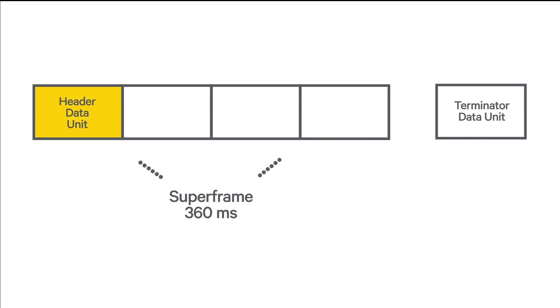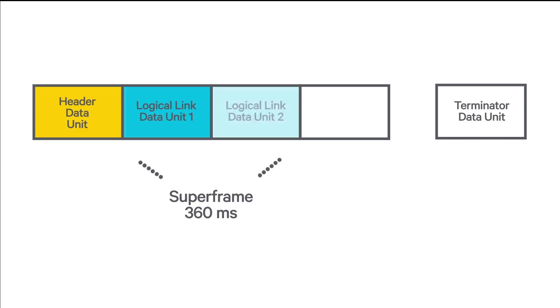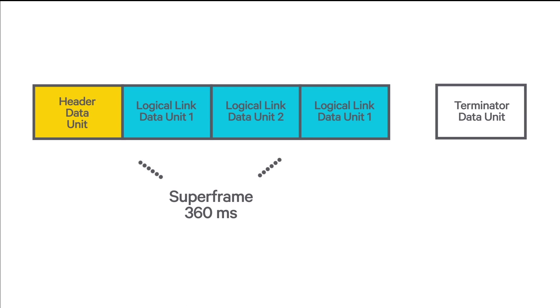A transmission starts with a header data unit, identifying the destination of the call and if encryption was used or not. It then continues with a series of logical linked data units, or LDUs, that carry the digital speech. The LDUs also repeat the signalling information and a synchronisation sequence, so radios can join the call late or re-enter if they drop out due to bad RF coverage and then come back into the call. The call ends with a terminated data unit, indicating that the PTT has been released and this is the end of the call.